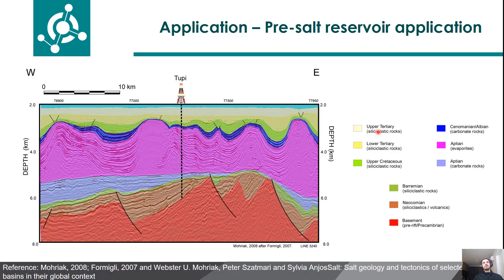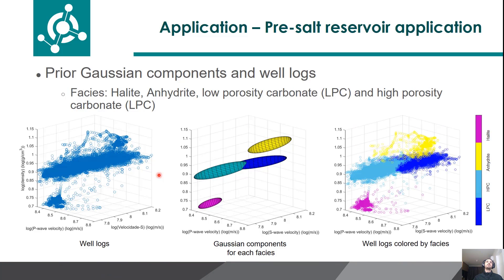About the application to the pre-salt reservoir, here we have the basic geological information. Below the Albion layer in blue, we have a big salt layer in pink with variable thickness. Below the salt, we have the carbonate reservoir in light blue. The salt is mainly composed by halite, but on the base of the salt it is common to find a thin layer of anhydrite, which has completely different elastic properties from the halite. Here we have the well logs where we can identify four facies: the halite and the anhydrite. We separate the carbonate as low-porosity carbonate and high-porosity carbonate, and here we can see the Gaussian components for each facies and the well logs color-coded by the facies.